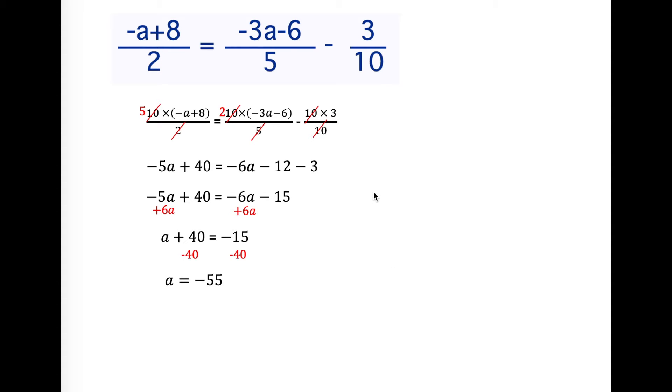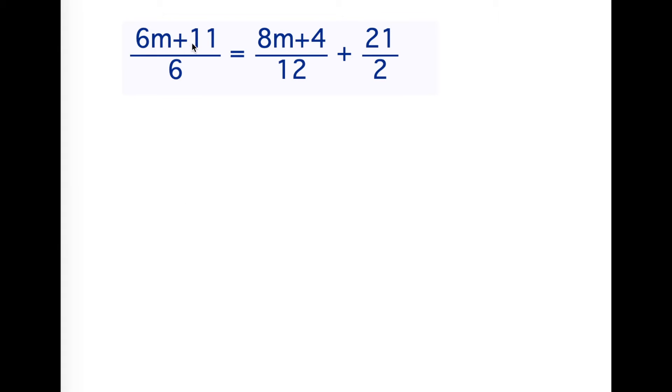Let's take a look at another example. Here we have (6m+11) divided by 6 equals (8m+4) over 12 plus 21 over 2. The lowest common denominator between 6, 12, and 2 is 12. 12 goes into all of these things. I'm going to multiply each term by 12.